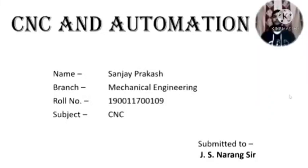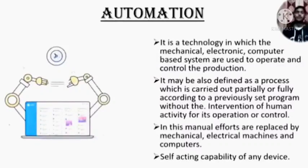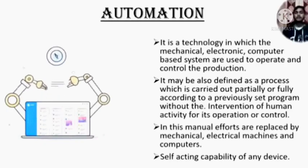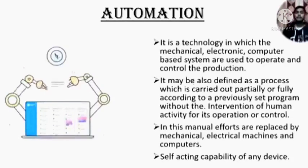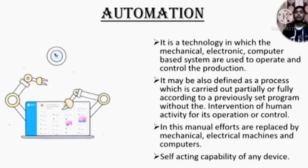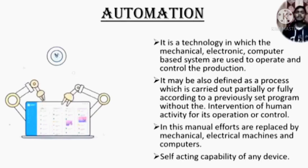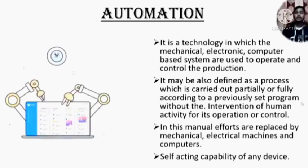Automation. First of all, we should know what is automation. Automation is a technology in which the mechanical, electronic, computer-based systems are used to operate and control the production. In this, manual efforts are replaced by mechanical, electrical machines and computers. It is the self-acting capability of any device.